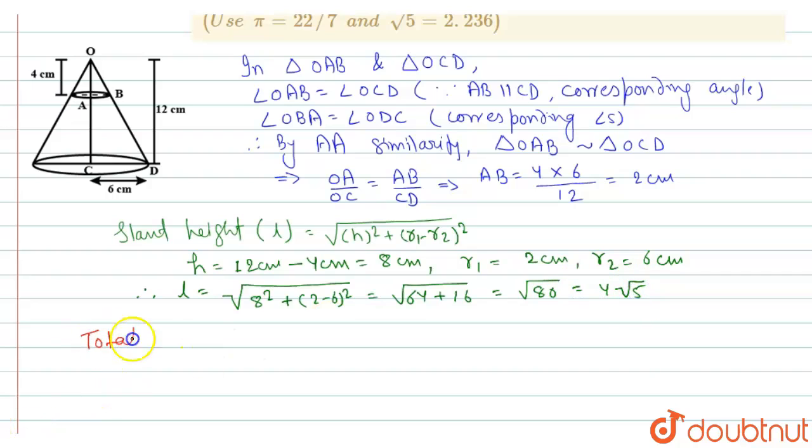So total surface area of frustum is equal to pi into (R1 plus R2) multiplied by L plus pi R1 square for top and plus pi R2 square for bottom.